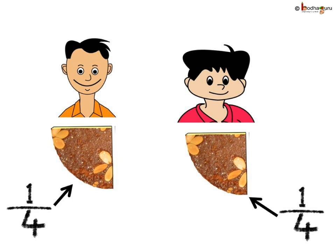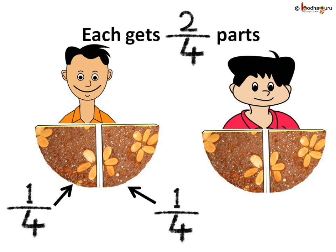But the children liked the cake and wanted more. So she gave the remaining two one-fourth pieces to them also. Both children got two one-fourth parts of the cake.